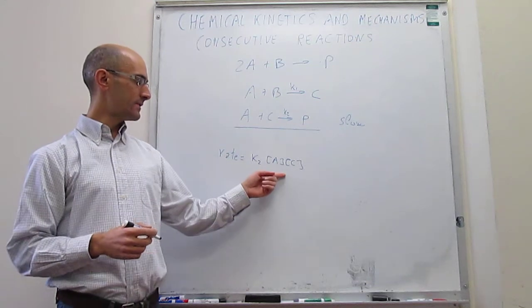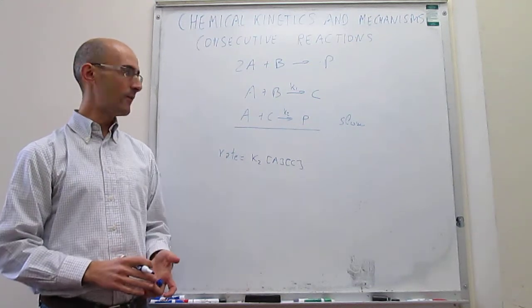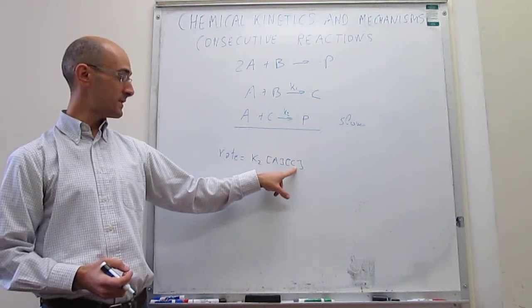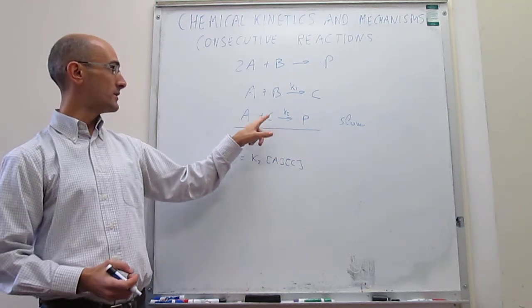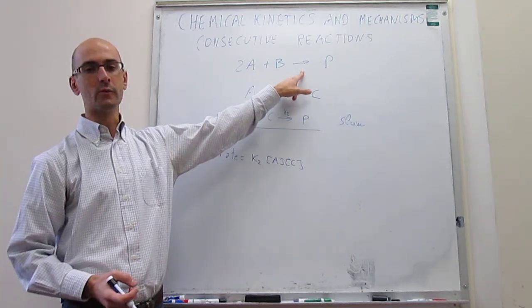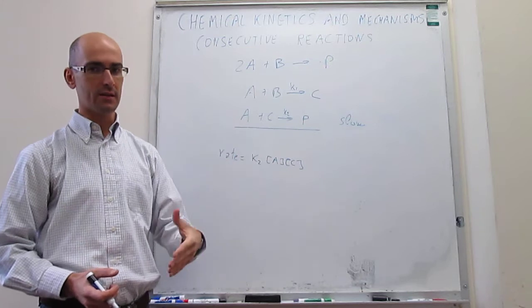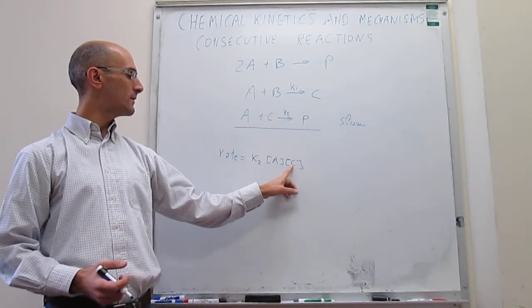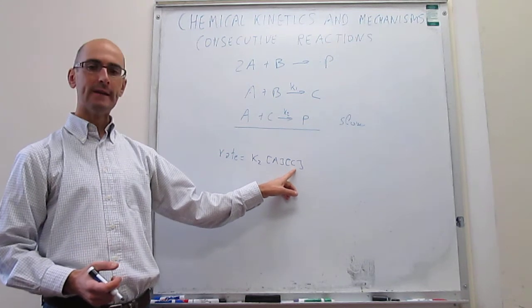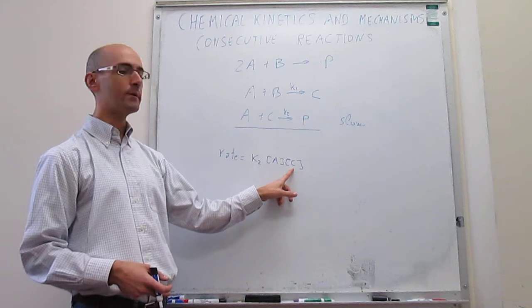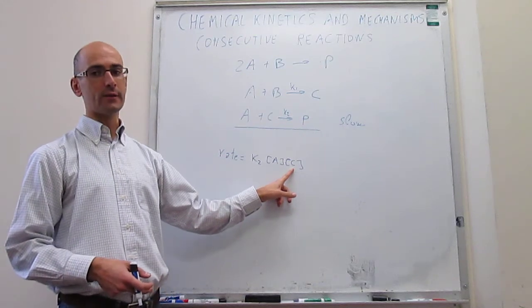Something that is not great about this rate law that we just have written right here is that in this particular case, we have here the concentration of C in the rate law. And as you can see in this reaction mechanism, C is not part of the overall reaction. Instead, it's just an intermediate. So we actually are going to have to learn tools so that we can actually replace C as a function of reagents or occasionally products.